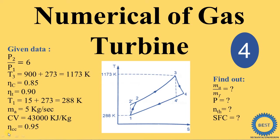In this video, we solve four numericals of gas turbine power plant compared to the last three numericals. These numericals are different because the last three were based on ideal cycles, while these are based on the actual cycle — because in these numericals, compressor efficiency, turbine efficiency, and combustion chamber efficiency are all given.